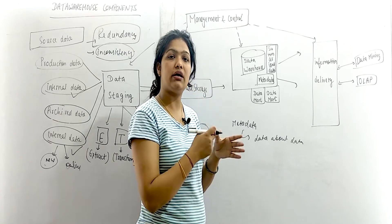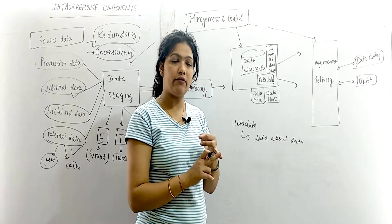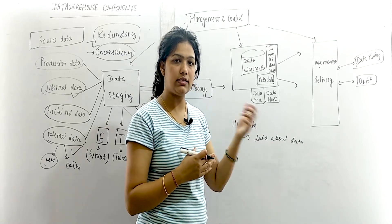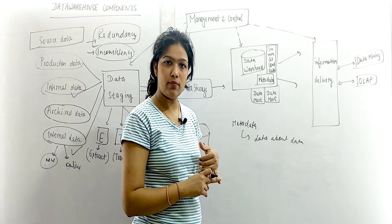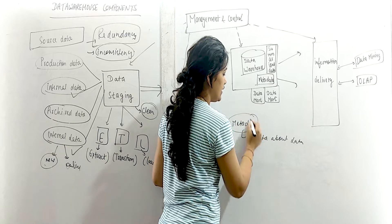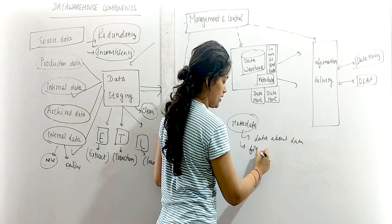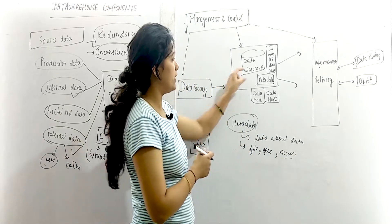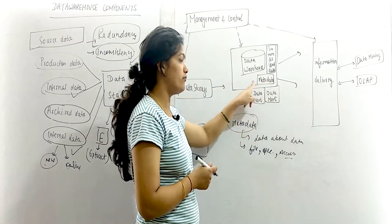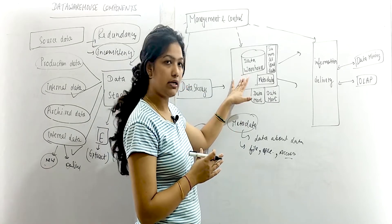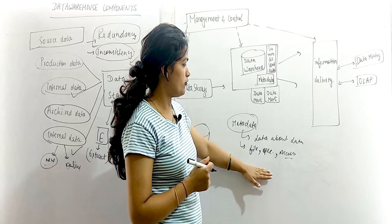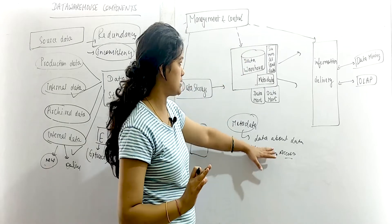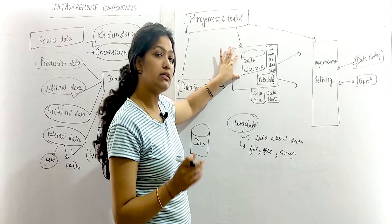Metadata will have all the file specifications — the name of the file, the location of the file, the size of the file, and the access methods, meaning who can access the data. Not everyone can access your data. For example, if this is a company and you are an employee, your personal data is not accessible to others. All access control methods for security are stored in metadata. So metadata is data about data: file names, specifications, locations, and access methods.